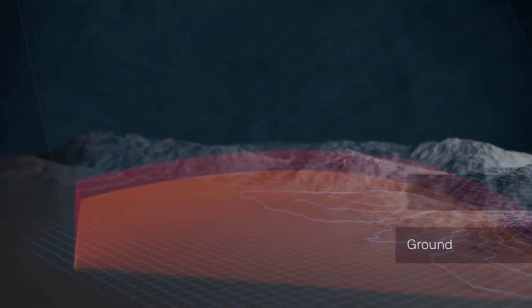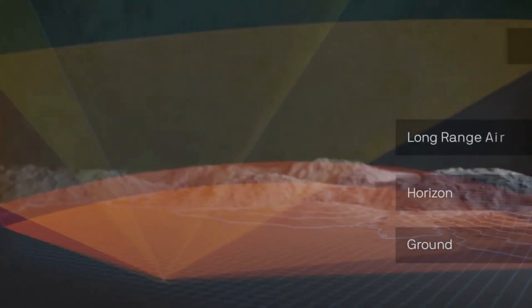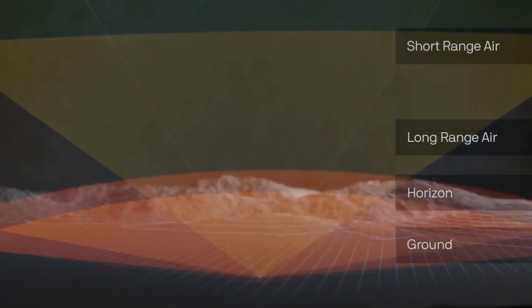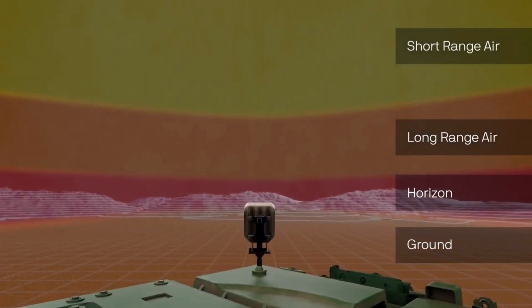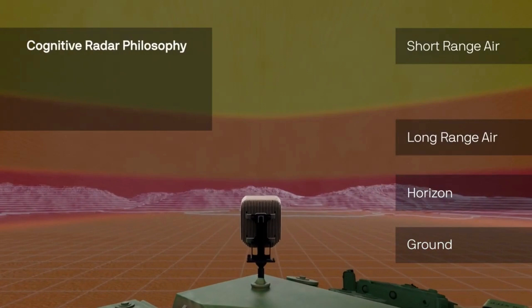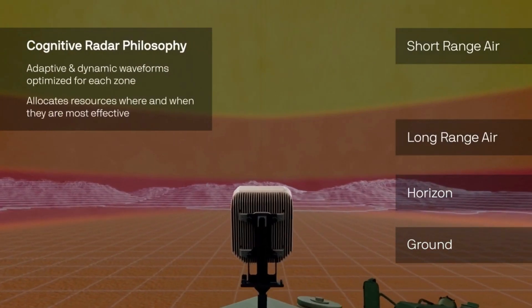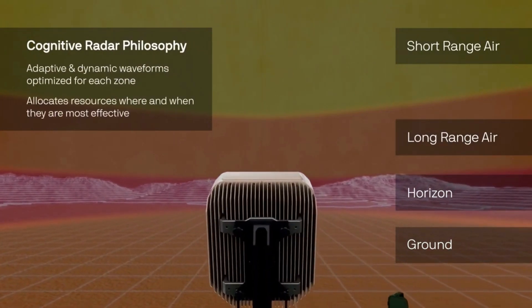Echoshield's next-generation search-while-track capability makes intelligent choices about how to optimally scan a volume of airspace by embracing a cognitive radar philosophy, allocating radar resources where and when they are most effective.